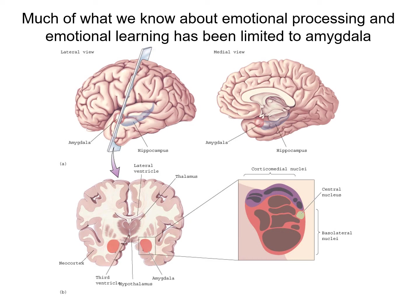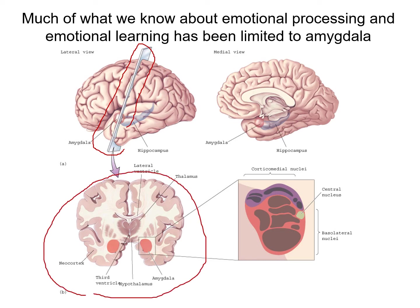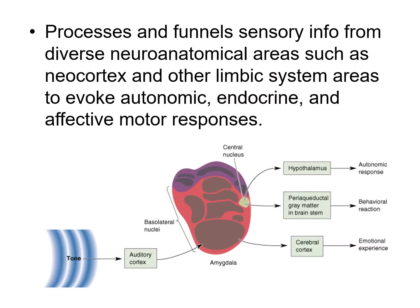If you take a lateral view of the brain and a cross section, you get a structure that looks like an almond — that would be the amygdala. Looking at the amygdala, there are three aspects: the central nucleus, the basolateral nuclei, and the corticomedial nuclei. Sensory information — for instance from the auditory cortex — gets passed on to the amygdala, which then processes multiple aspects of that input.